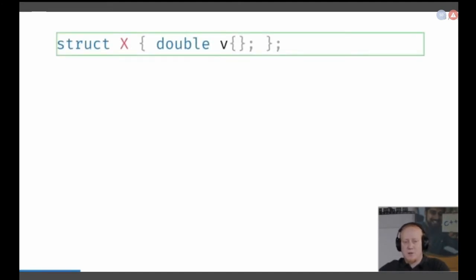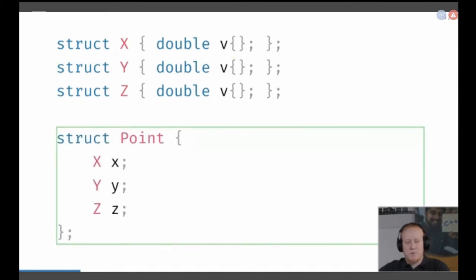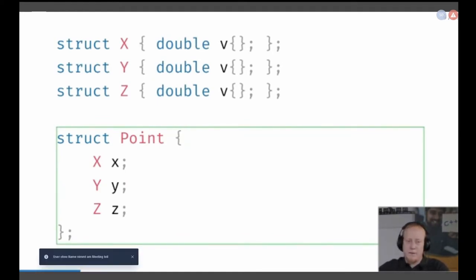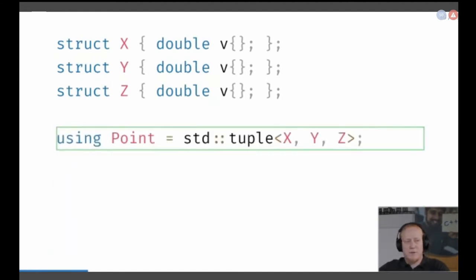One very easy solution is we make a structure for each field. For X, Y, Z, we create three different structures and our point then becomes an implementation of these structures. The big benefit is that every coordinate has its own type, so you cannot mix it — you cannot assign a Y coordinate to an X because it's a different type. When you create the X coordinate, you have to use the constructor of the X struct. There's no automatic conversion. It's clear that you are using a double as an X coordinate — very useful.